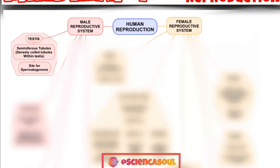In adults, each testis is oval in shape with a length of about 4 to 5 cm and a width of about 2 to 3 cm.